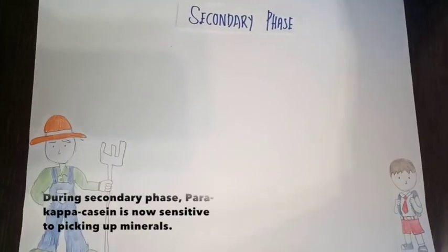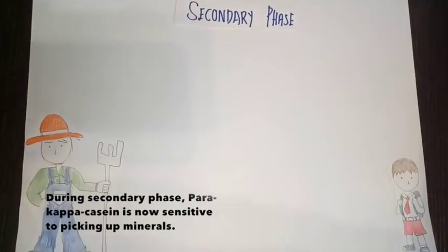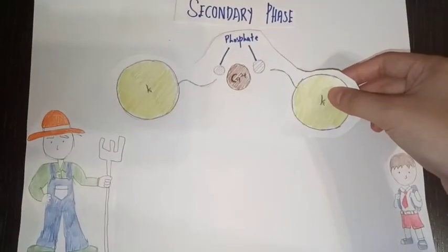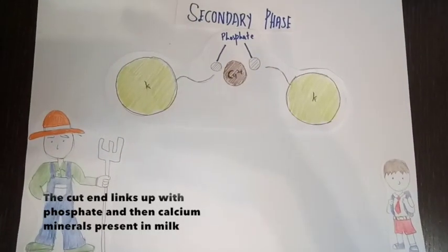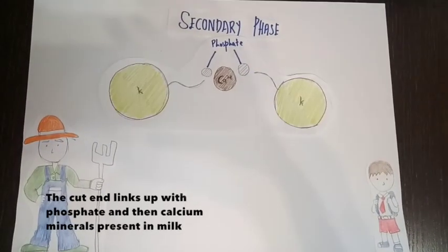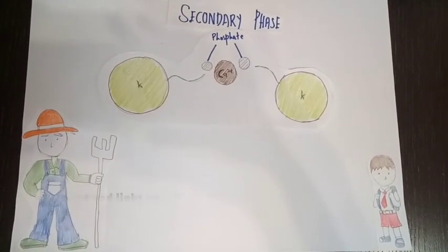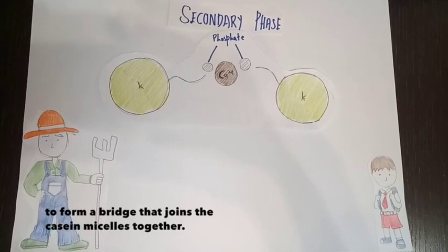During the secondary phase, para-kappa casein is now sensitive to picking up minerals. The cut end links up with phosphate and then calcium minerals present in milk to form a bridge that joins the casein micelles together.